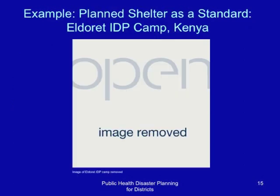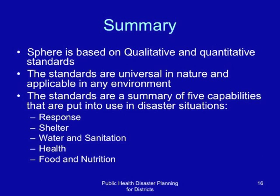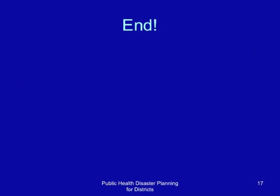This is an example of a planned shelter as a standard. In summary, SPHERE is based on qualitative and quantitative standards that are universal in nature. The standards summarize five capabilities important in the management of disasters involving mass displacement of people: general response management, shelter, provisions for water and sanitation, provisions for health, and provisions for food and nutrition.